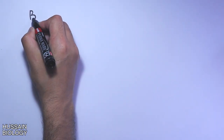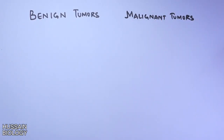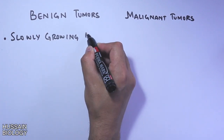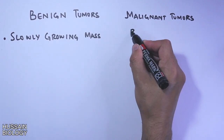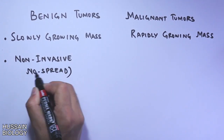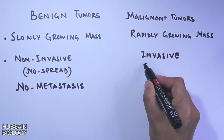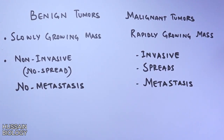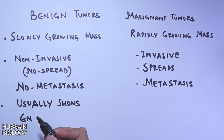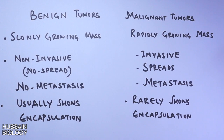When all these mutations occur, we get two important types of tumors: benign and malignant. Benign tumors are slowly growing and non-invasive, do not show metastasis, and show encapsulation. Malignant tumors are rapidly growing, invasive in nature, show metastasis, and rarely show encapsulation. These are the major differences between benign and malignant tumors.